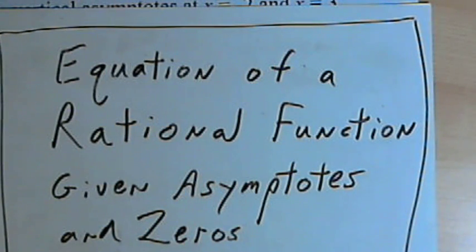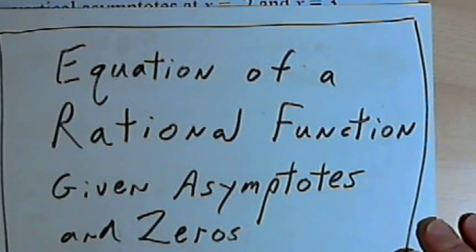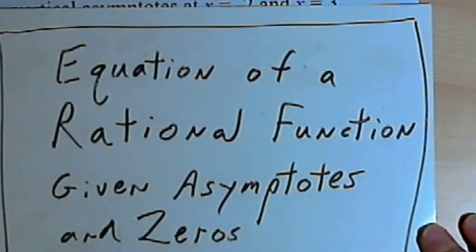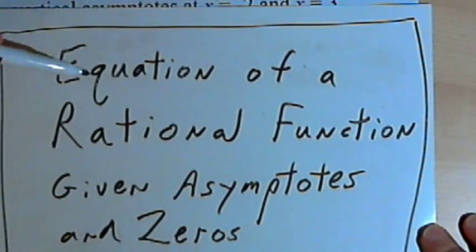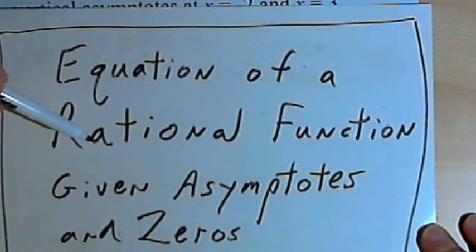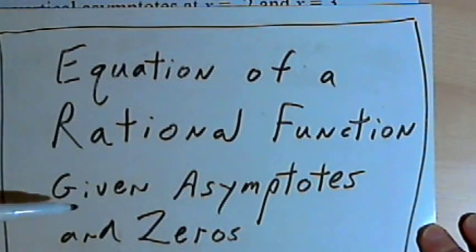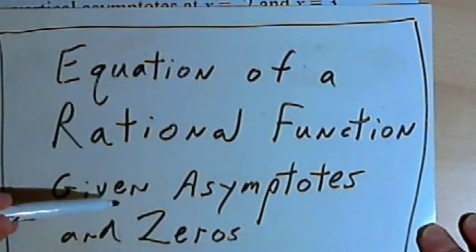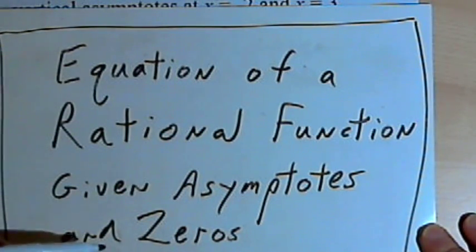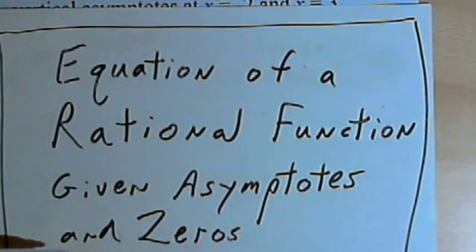This video is provided as supplementary material for courses taught at Howard Community College. In this video I want to show how to find the equation of a rational function when you're given its asymptotes and its zeros.